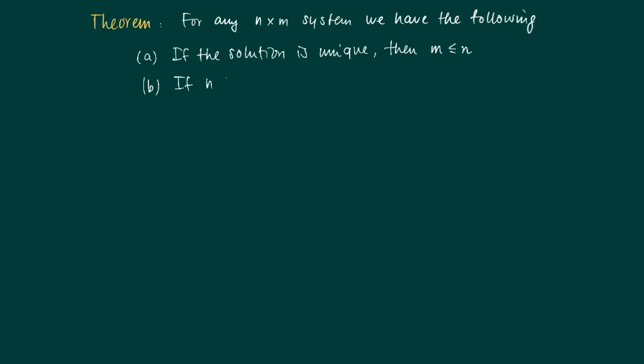If we have a smaller number of equations than we have variables, then we actually have two cases: either there are infinitely many solutions or there are no solutions.